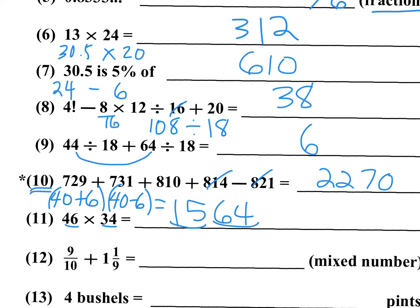Number 12: 9 over 10 plus 1 and 1 ninth. If you change that mixed number to an improper fraction, that's 10 over 9. So you have a fraction plus its reciprocal: 9 over 10 plus 10 over 9. Whenever you see that pattern, the answer is going to be 2 and a fraction. The fraction's numerator is the difference between numerator and denominator squared — 1 squared is 1. The denominator is 10 times 9, which is 90. So for number 12, the answer is 2 and 1 over 90.